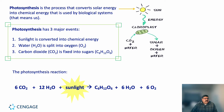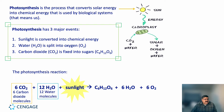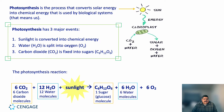In cellular respiration, it's actually the opposite — we take that glucose molecule plus water and our byproducts are carbon dioxide and water. So they're kind of the opposite of each other. In photosynthesis we have six carbon dioxide molecules, 12 water molecules, one sugar or glucose molecule, and then six water molecules and six oxygen molecules as byproducts.